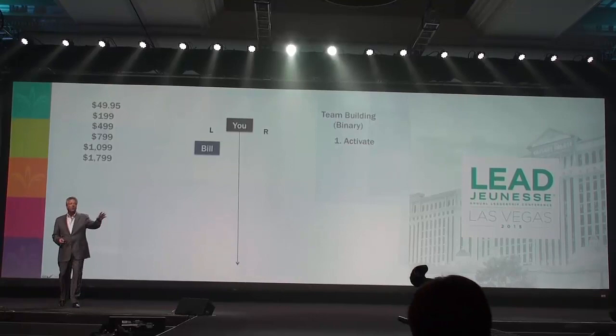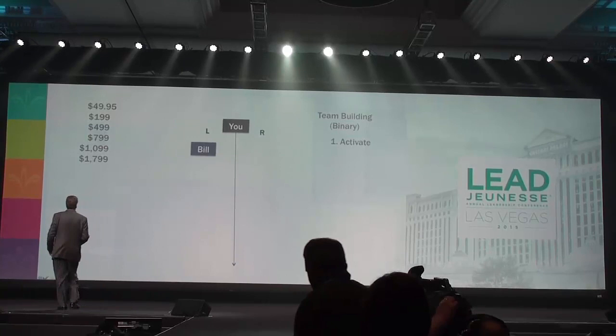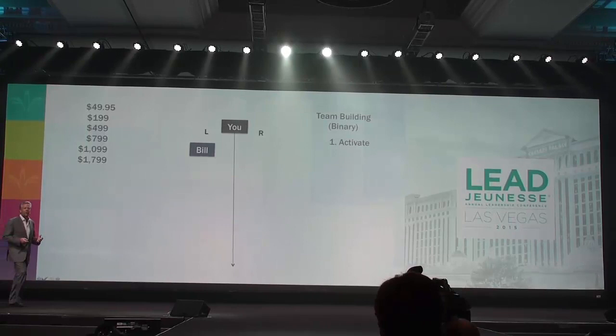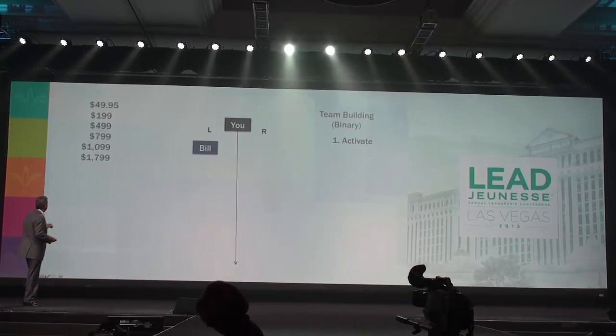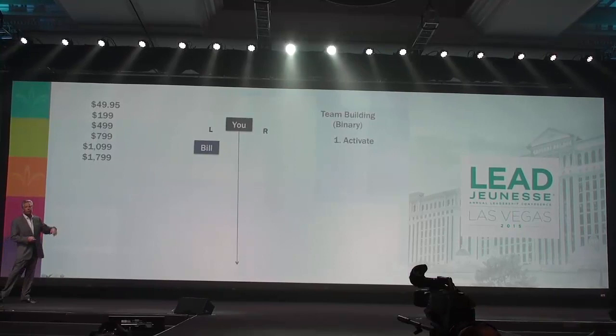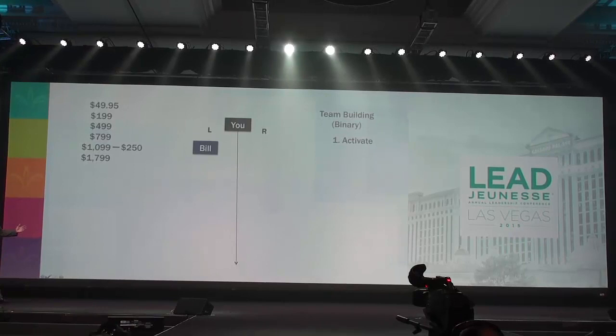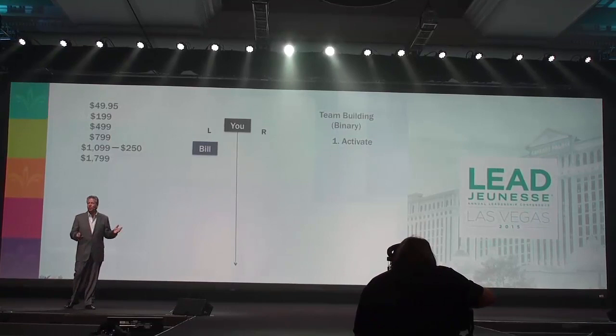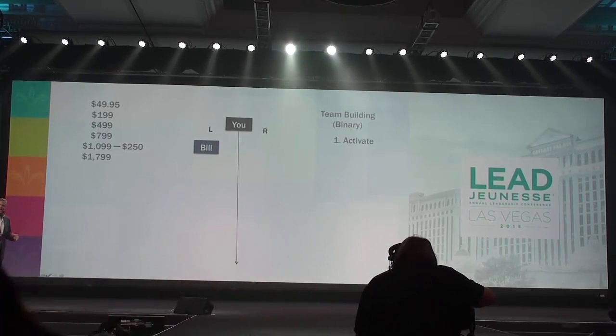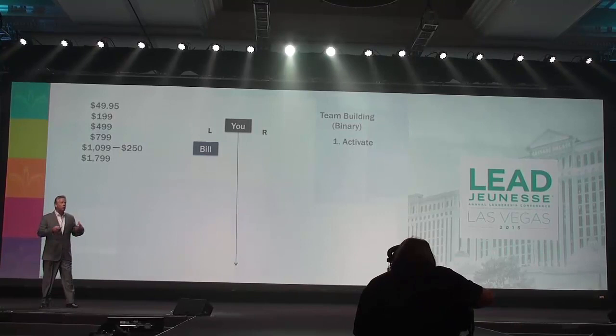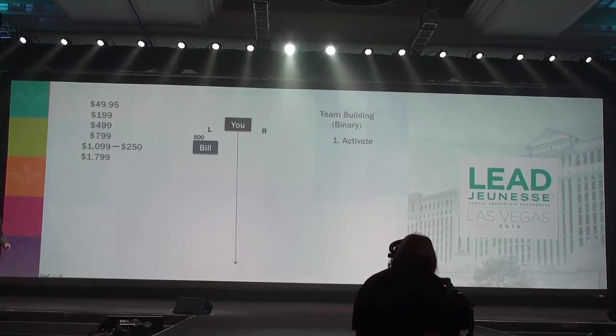According to the rules, the first thing Bill's got to do is activate. He looks over there and says, 'I'm going to order the $1,099 Ambassador Pack.' It's very popular — there are lots of advantages to that package. He selects the $1,099 package, the company ships him the product, and you earn for your time and trouble $250. Is that nice? Each product package has a point value attached to it, and they use those points to calculate your team commissions. That package carries a 500-point value, placed on your left side.